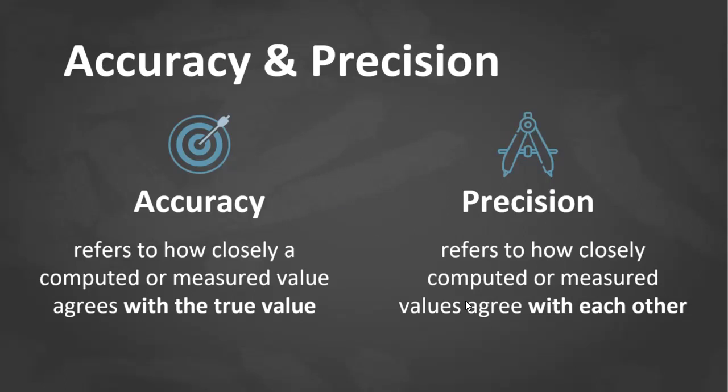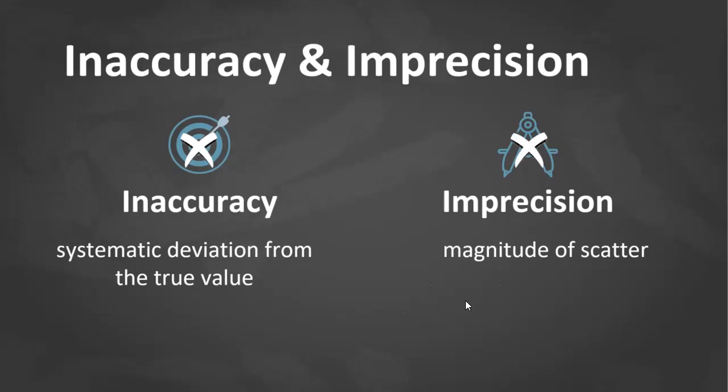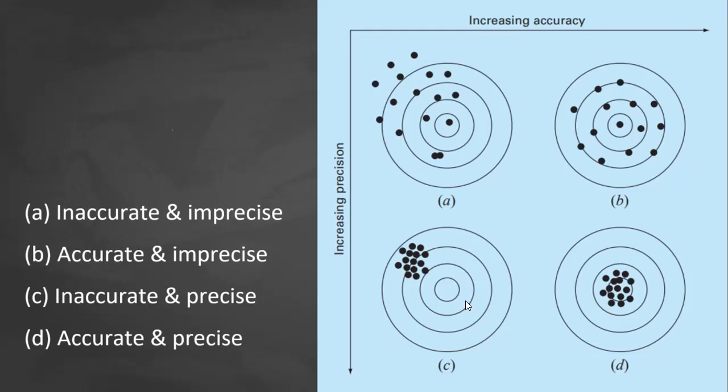The opposite of that would be inaccuracy and imprecision. Inaccuracy is the deviation from the true value, while imprecision refers to the magnitude of scatter.